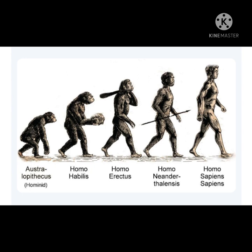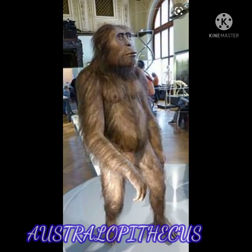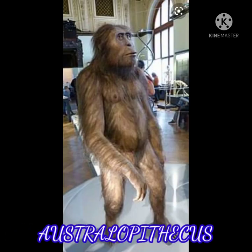The evolution of man starts in Australopithecus, Homo habilis, Homo erectus, Homo neanderthalensis, and Homo sapiens sapiens. The first stage is Australopithecus.